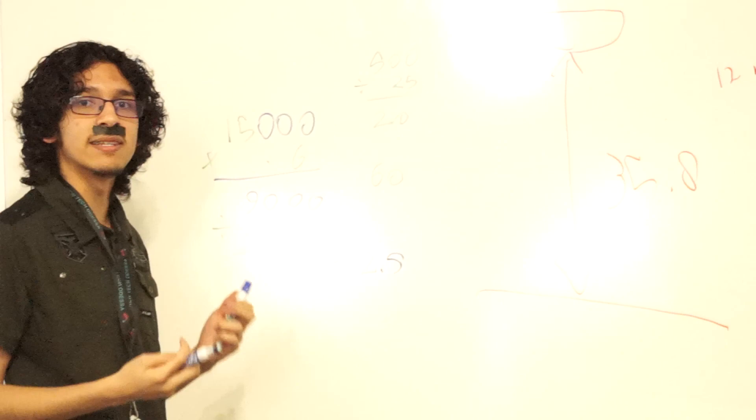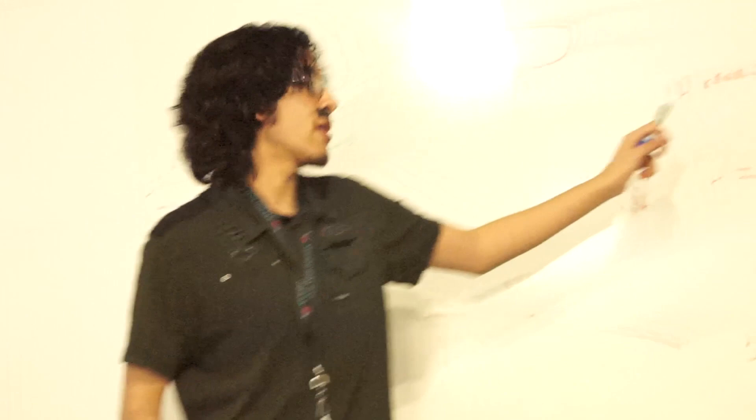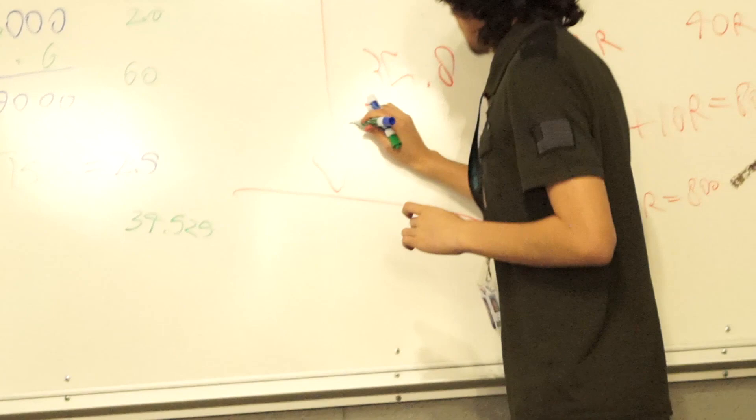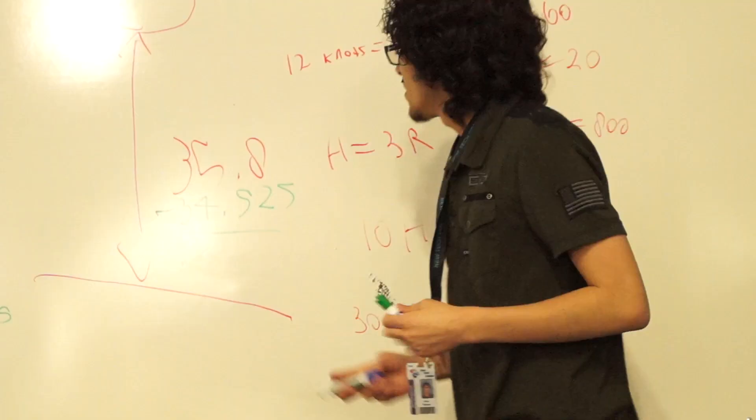And then, we can multiply this 2.5 by this 13.81 to get 34.0525. And if we subtract 35.8 by this, we find that we are 1.275 miles off of the shore at the rate that we are going.